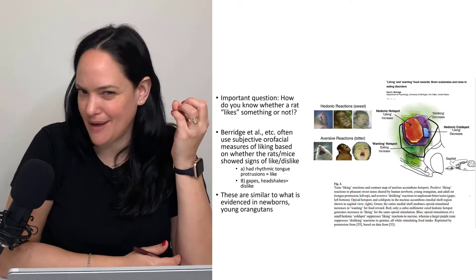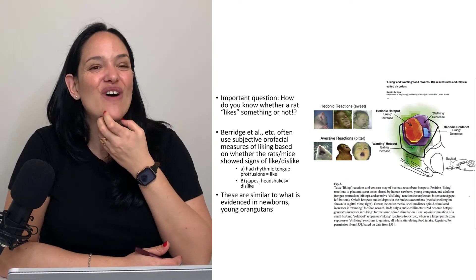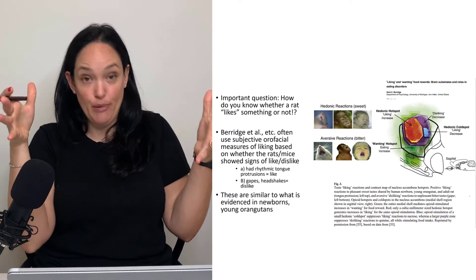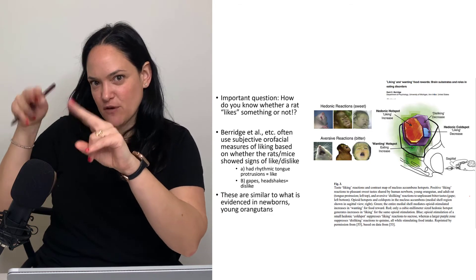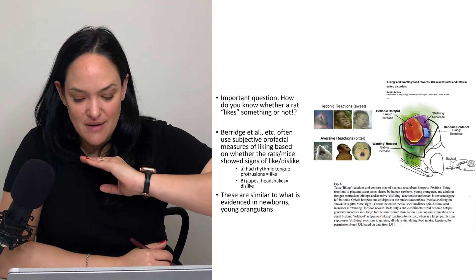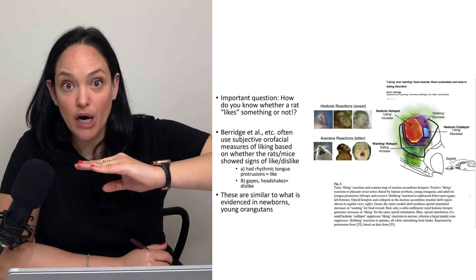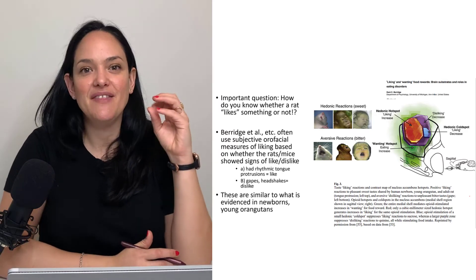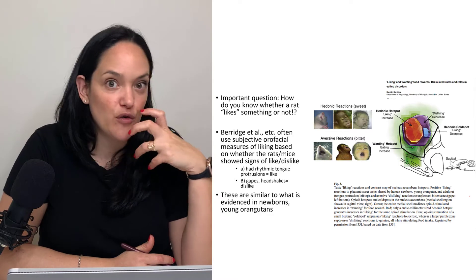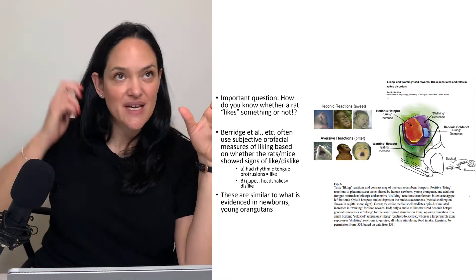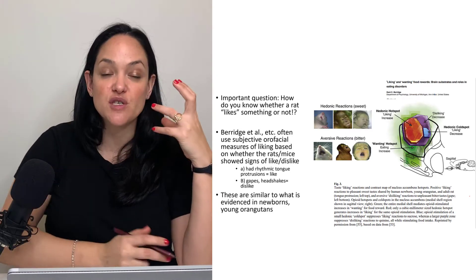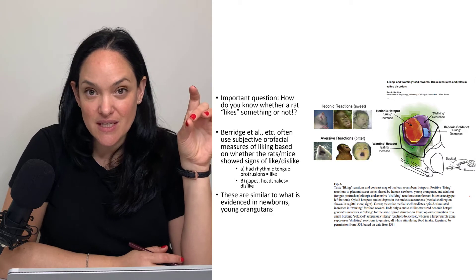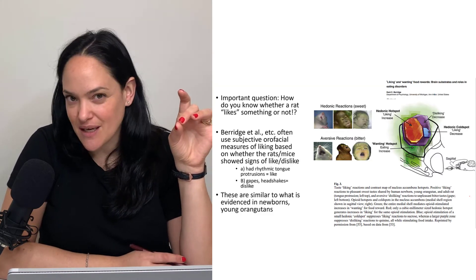If many of these studies happen in mice, how do you measure liking in a mouse? They place a little camera under the experimental box near where the mouse receives the reward, and they look at changes in the mouse's oral facial expressions. Mice show similar facial responses to what we see in newborns and infants when they like or dislike something.